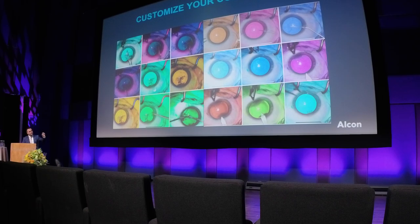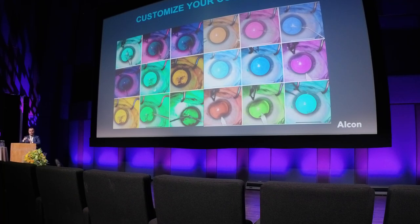Because in the eye, especially in the anterior segment, we have transparent tissues with different refractive properties. We can play with the color channels and create boundaries between them, distinguishing better the different transparent tissues — something that cannot be done with an analog microscope.